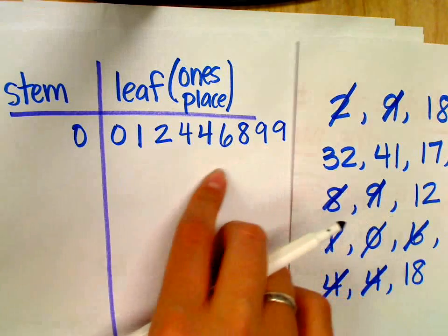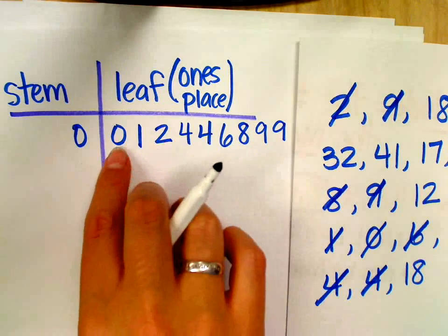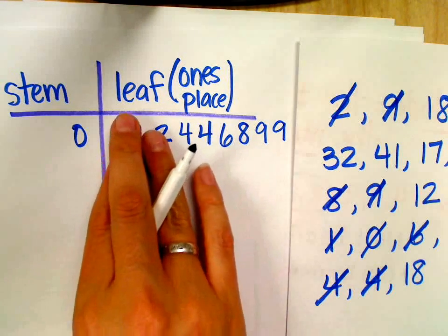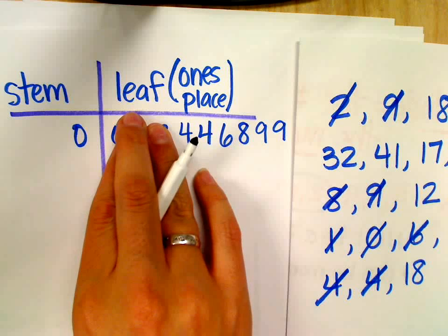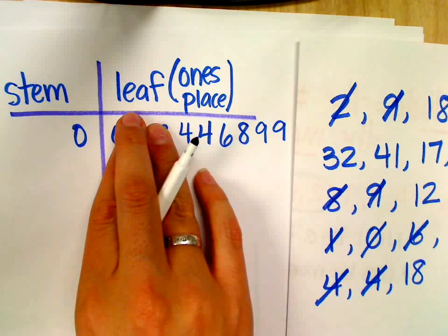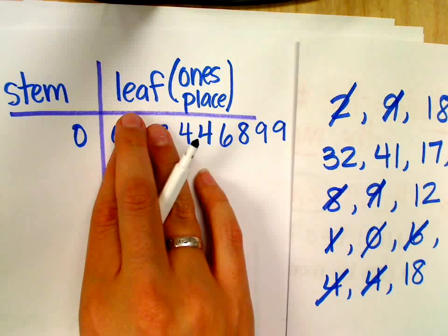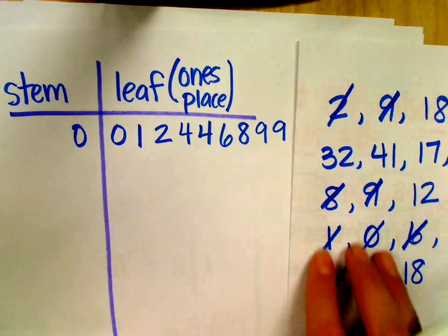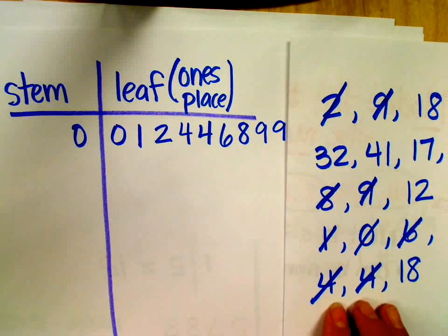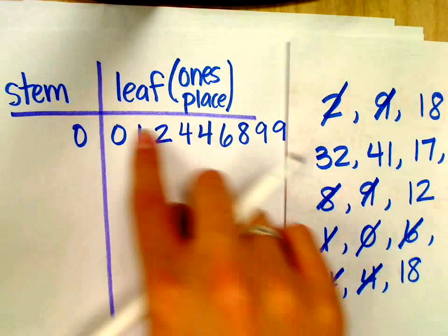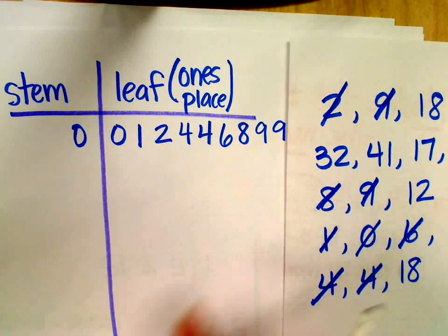Notice, please, that these numbers here in my leaves go from least to greatest. What if the smallest number was a four? If the smallest number was a four, then this zero, one, and two would be gone. And I wouldn't have to worry about it at all. I would start with the four. You're only going to be putting the numbers that are from my data chart or my table or whatever as part of my stem and leaf plot.